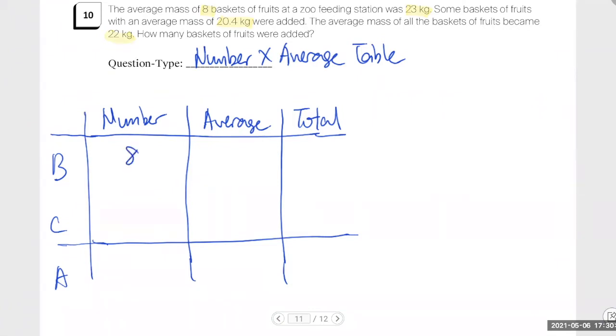Good. Where am I supposed to put 23 kg? Average of B. Good. Where am I supposed to put 20.4 kg? Average of C. Yes.